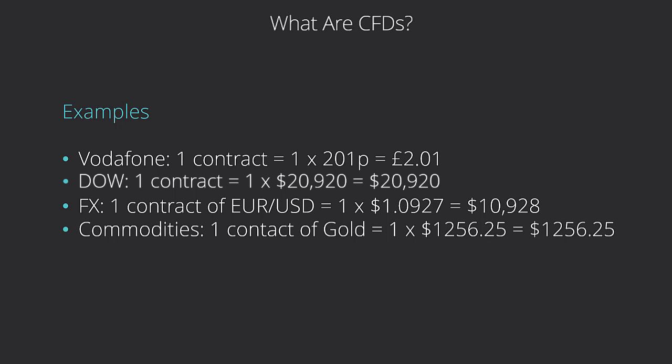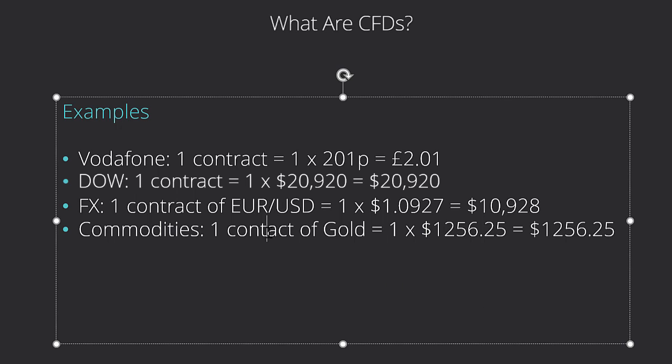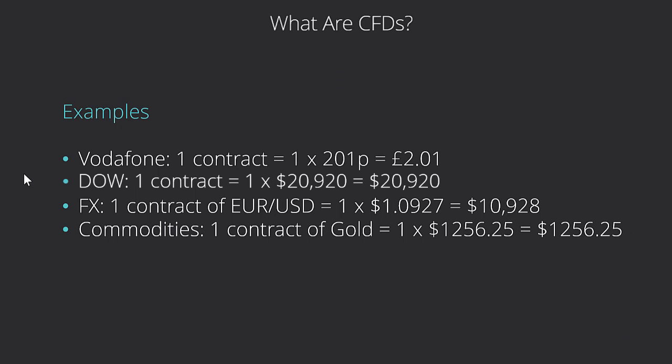You might wonder why EUR/USD isn't just one euro per contract — but that would mean a ridiculous number of contracts just to get a tiny move, and currencies don't move that much, so they scale it up to give you a fair bit of bang for your buck. You can get smaller contracts too — again, double-check with your broker. For gold, one contract is going to be one thousand, two hundred and fifty-six dollars and twenty-five cents.